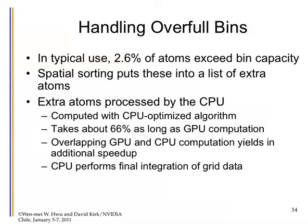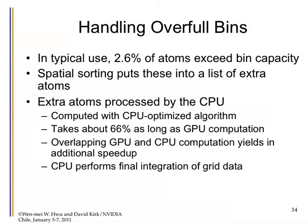In a typical use of this kind of algorithm, about 2.6% of the atoms for the small bins will exceed the capacity and get kicked to the CPU. That takes about 66% as long as GPU computation. Because the GPU is running about 20 times faster, if you kick 5% of the atoms to the CPU, they will be balanced. You'll still have some extra time for the CPU to do something else. Anywhere between 2.6% and 4% is actually reasonable for this particular application.